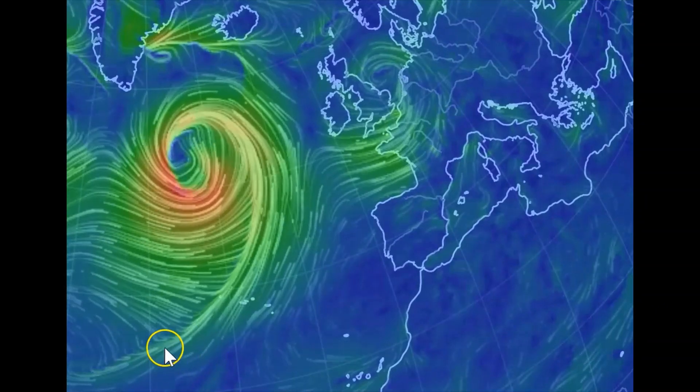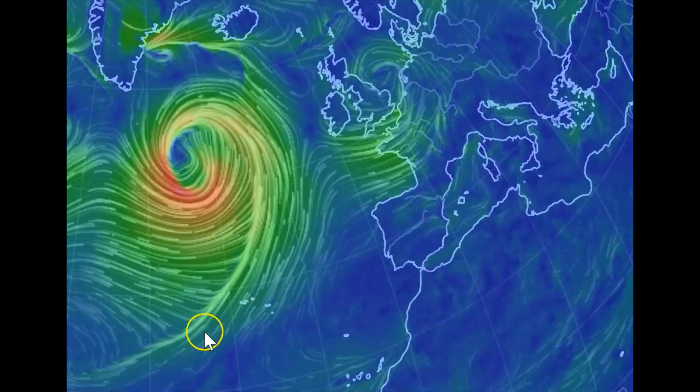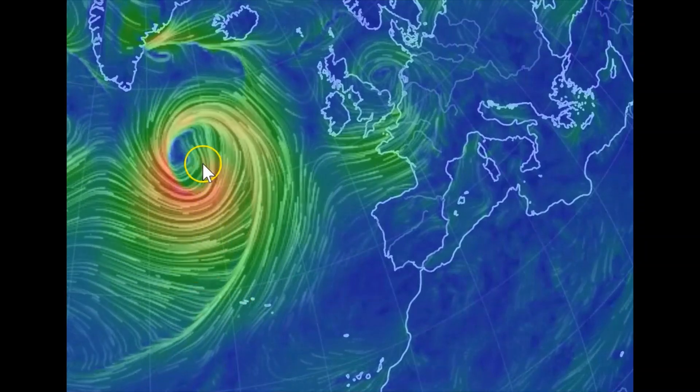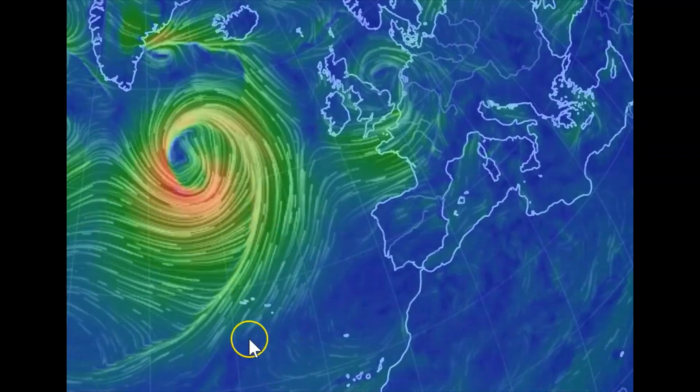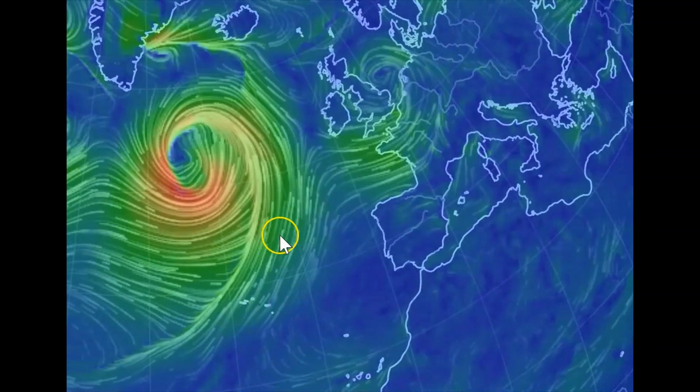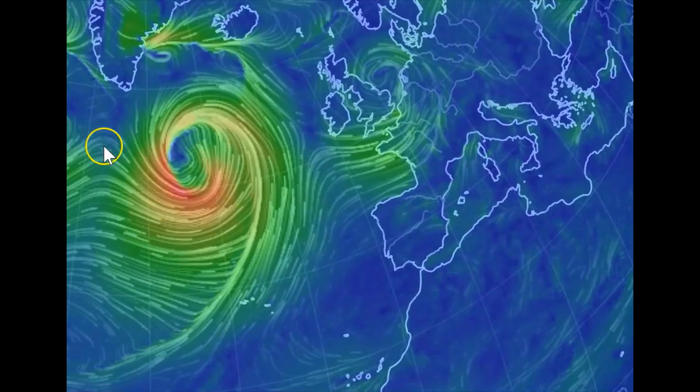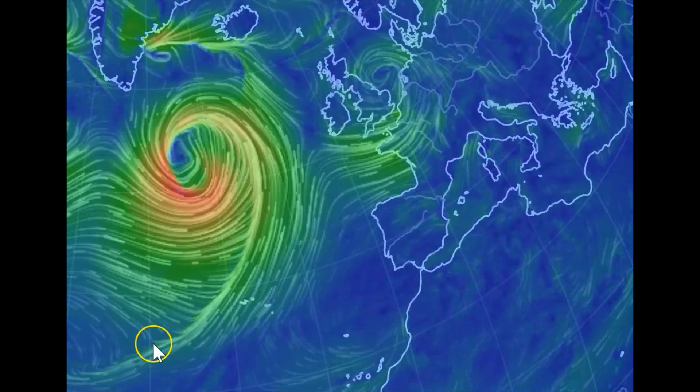We're coming back to our plan view for this one. Let me orientate you first to see where we are with the depression. There's the center of it, there's the air circulating around, there is your warmer TM air coming up from the southwest and colder PM air coming down from the northwest.